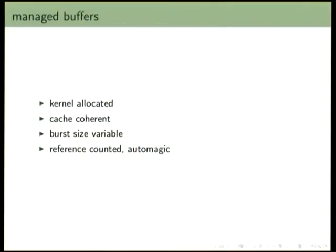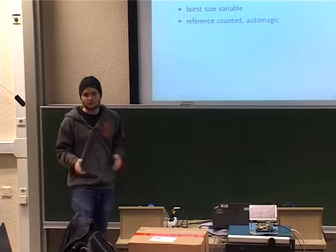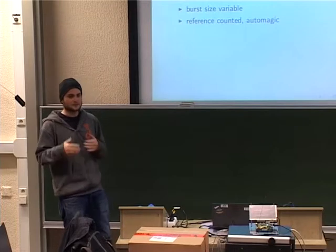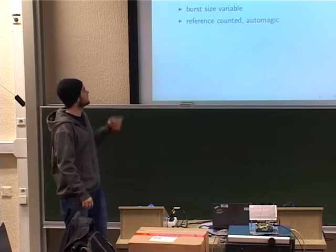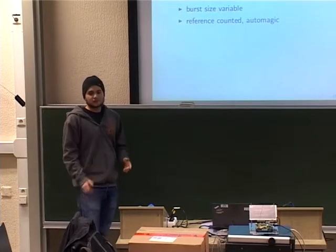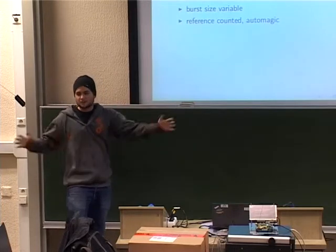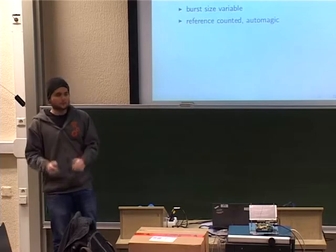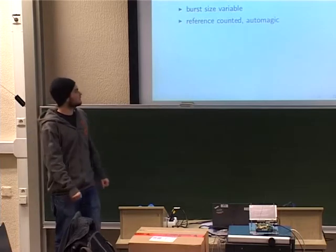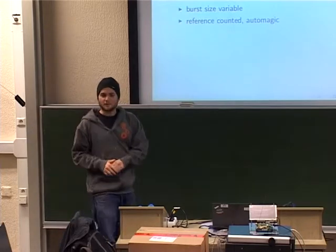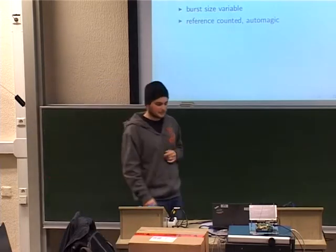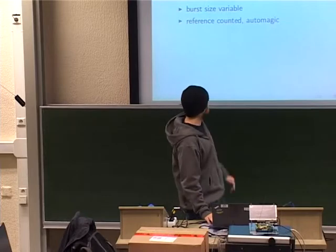What are managed buffers for people that don't know UHD? Managed buffers are kernel-allocated buffers — in this case through the ACP port we're using here. They're cache coherent. The burst size is variable, so you can make transfers as you need them. They're reference counted and automatically submitted — we'll see that later.